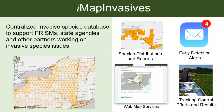Just for brief context for anyone not so familiar with IMAP Invasives: it's a database used by several states and provinces. In New York, it's the centralized invasive species database to support PRISMs, state agencies, and other partners working on invasive species issues. You can view species distributions, there are early detection alerts that people can sign up for, you can track control efforts and results, and of course the main thing I'll be talking about today is how to report observations to IMAP Invasives.